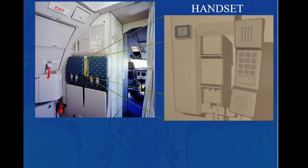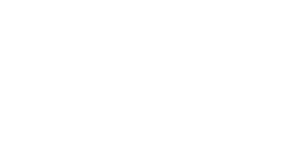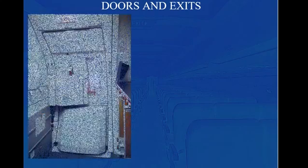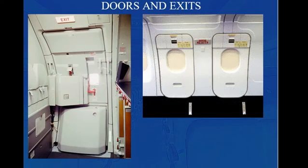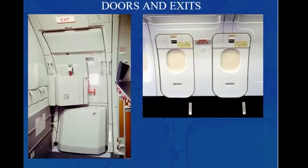All the handsets are identical. They can be used for passenger announcements and for interphone calls. The A319 and A320 aircraft are equipped as follows: the A320 has two forward and two aft cabin doors and four overwing emergency exits, two on each side. The A319 has two forward and two aft cabin doors and two overwing emergency exits, one on each side.